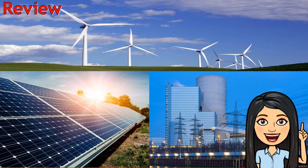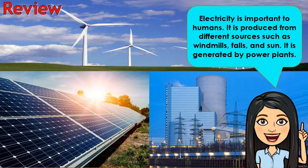Let's have a review of our previous lesson. We've learned that electricity is important to humans. It is produced from different sources such as windmills and the sun. It is generated by power plants. Electricity is the flow of electrical power or charge.